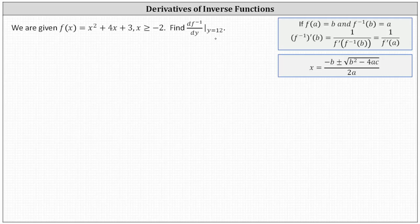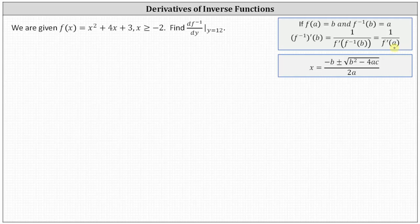Instead of determining the inverse derivative function value at y equals 12 by finding f inverse of y and then finding its derivative and substituting in y equals 12, we'll use the fact that the derivative function values of f of x and f inverse of x are reciprocals of one another at corresponding points. For example, if f of a equals b and f inverse of b equals a, then f inverse prime of b equals one divided by f prime of f inverse of b. Since f inverse of b equals a, we can say f inverse prime of b equals one divided by f prime of a.